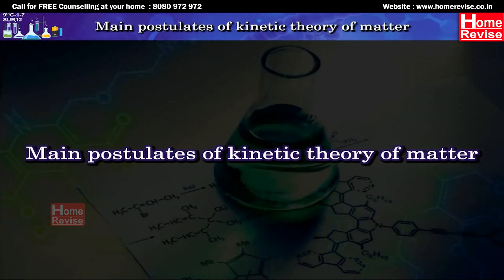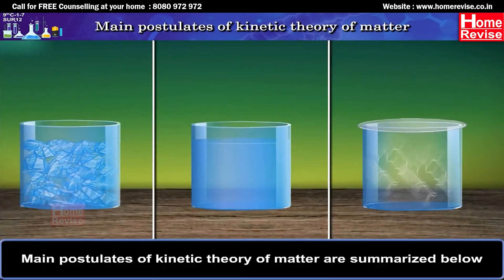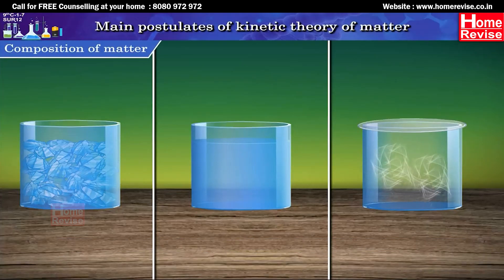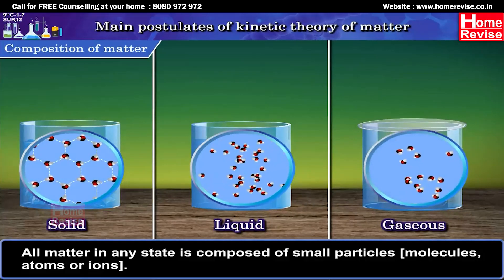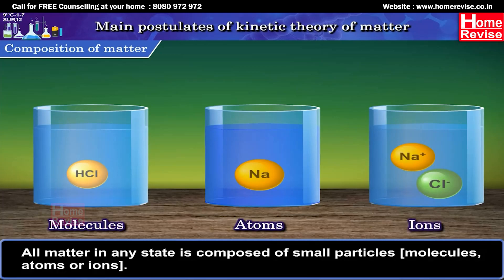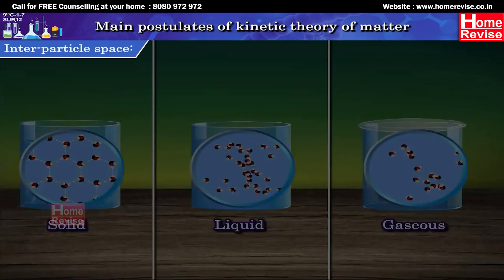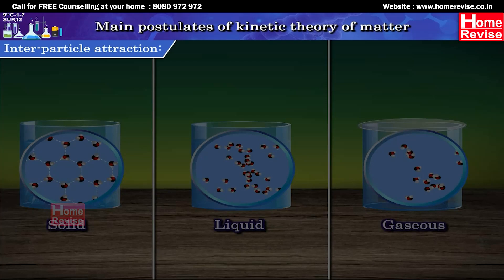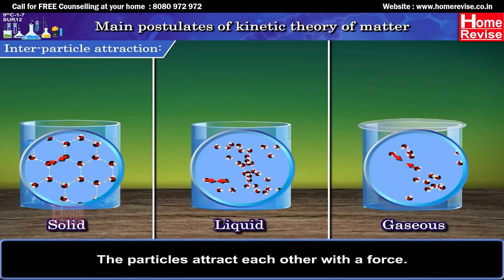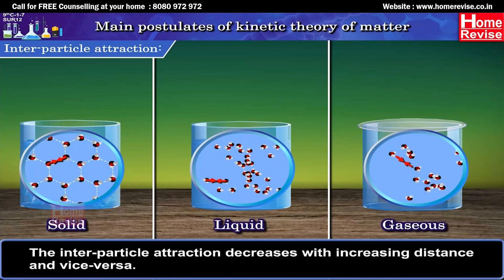Main postulates of the kinetic theory of matter. Composition of matter: All matter in any state is composed of small particles — molecules, atoms or ions. Interparticle space: The particles are arranged in a way such that spaces or gaps exist between them. Interparticle attraction: The particles attract each other with a force. The interparticle attraction decreases with increasing distance and vice versa.